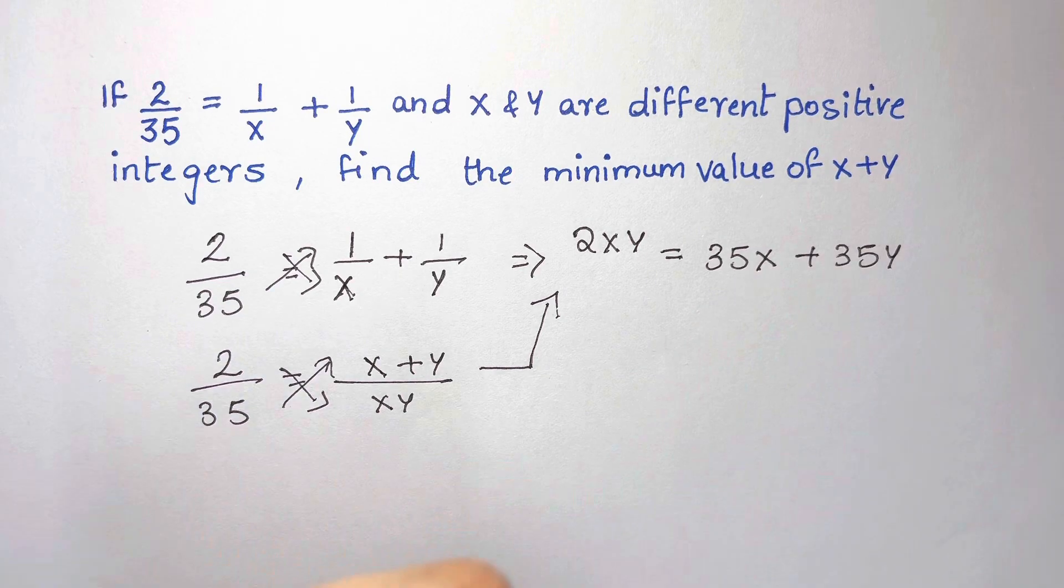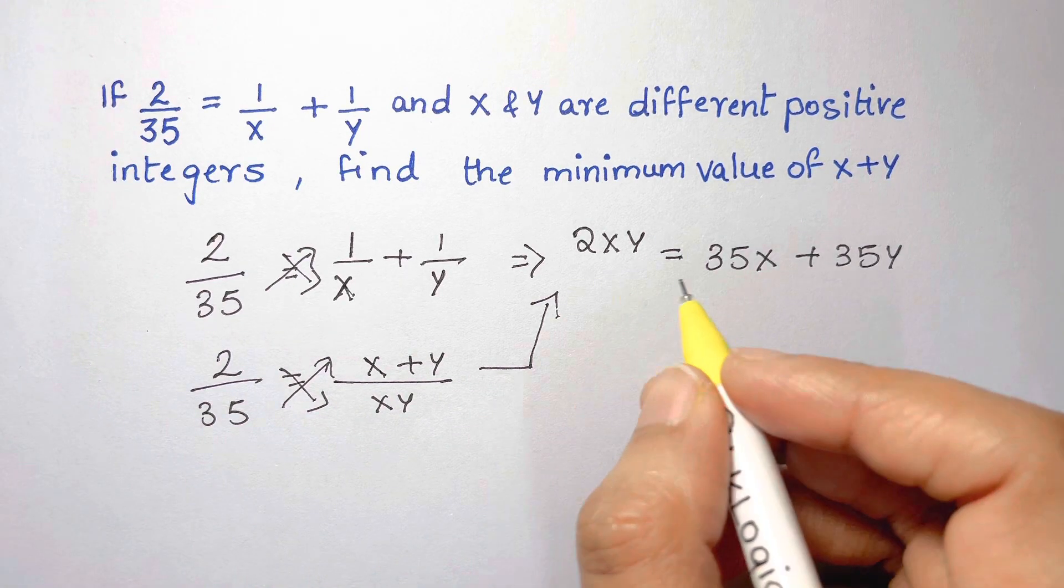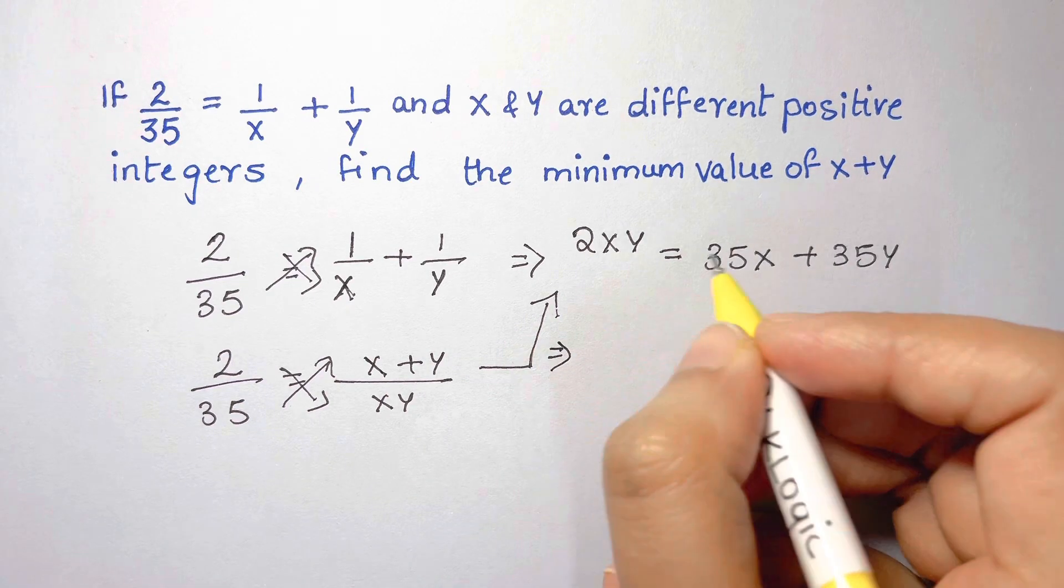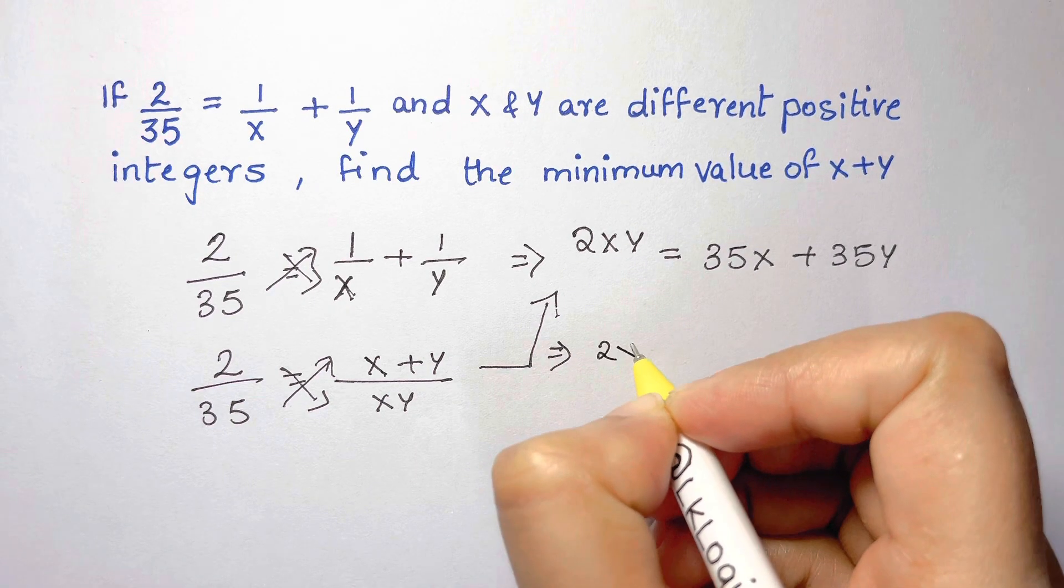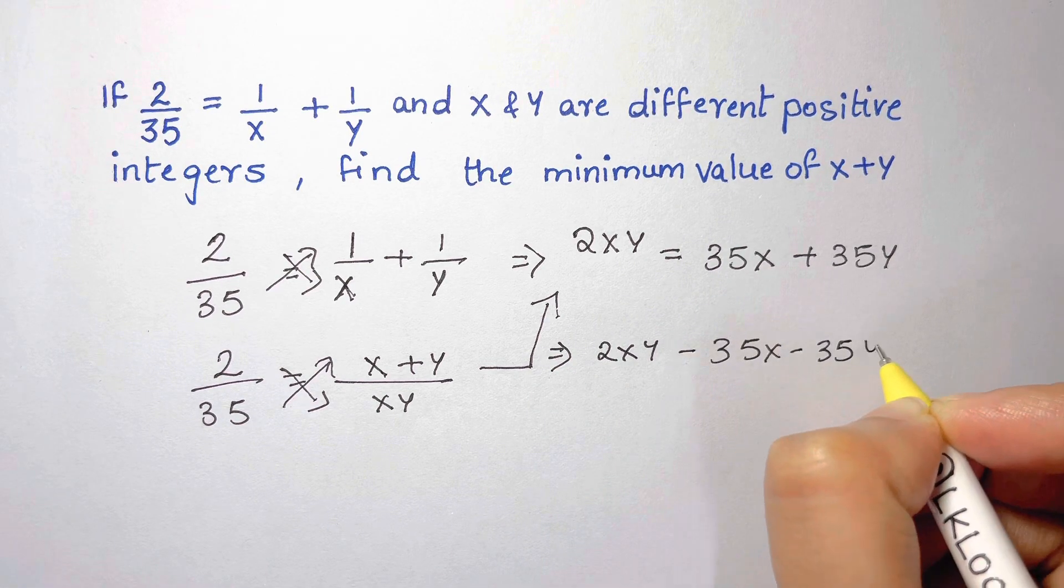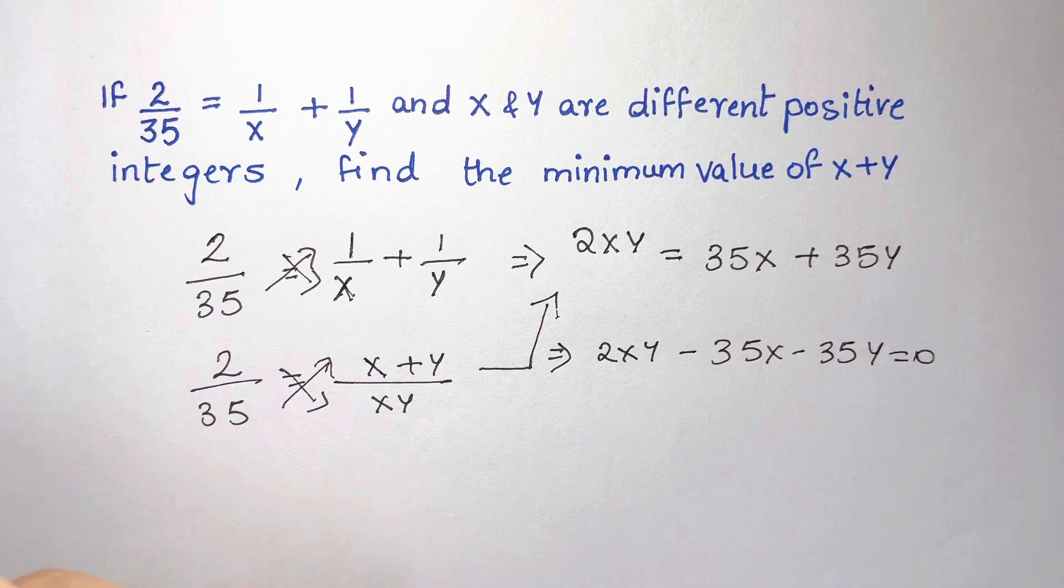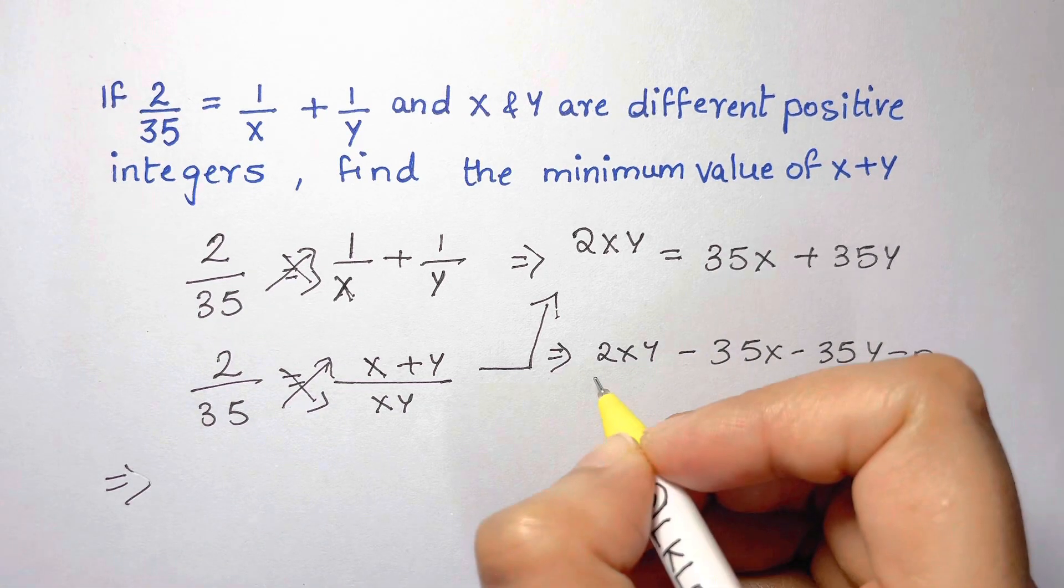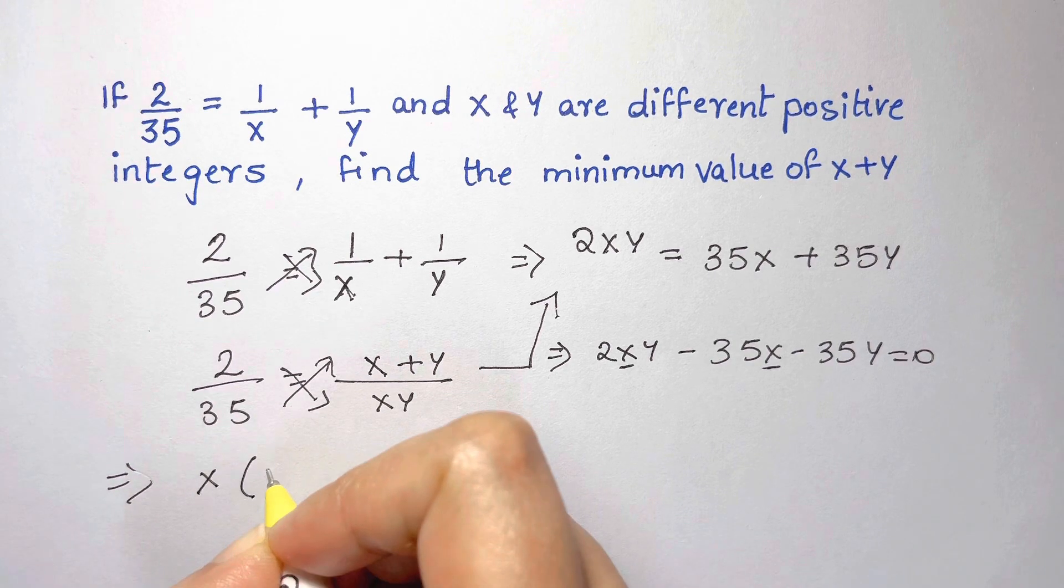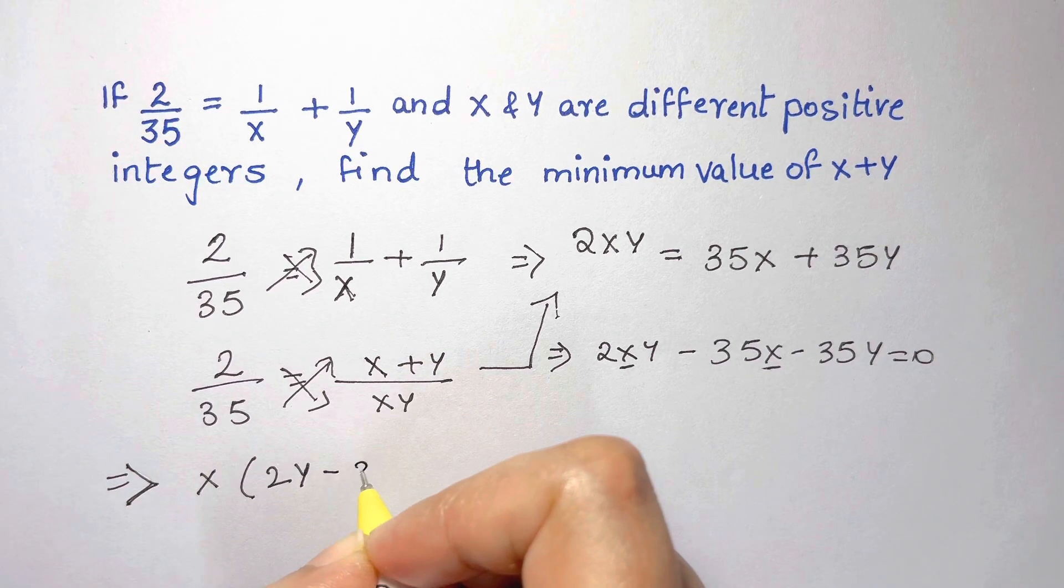And after this step, let's bring all the terms on one side. So we will have 2xy minus 35x minus 35y equals 0. I'm going to take out x common from this and this. So we are left with 2y minus 35.